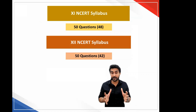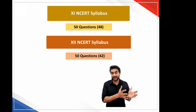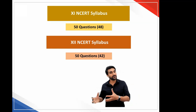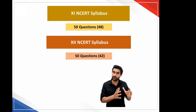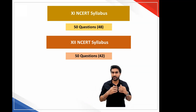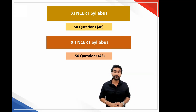This was the first year where you had 100 questions, with a distribution of 70 compulsory and 30 optional. So you had 100 questions in the paper, out of which 50 questions were asked from the 11th NCERT textbook and the remaining 50 from the 12th NCERT textbook. This is different compared to last year where you had 90 questions — 48 from 11th and 42 from 12th.